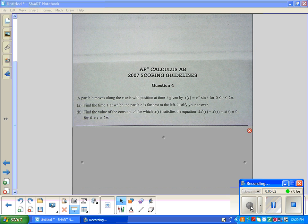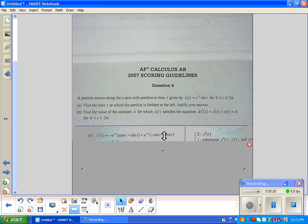Letter b says find the value of the constant a for which x(t) satisfies the equation a·x''(t) + x'(t) + x(t) = 0 from zero to π. So again, first thing you're going to have to do is take the first and second derivative. You had the first derivative. Now we have to take the second. So they had the first derivative in letter a.